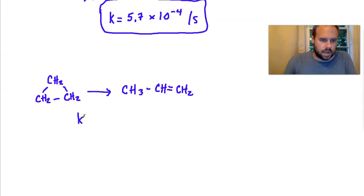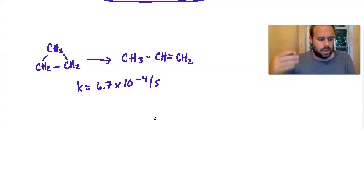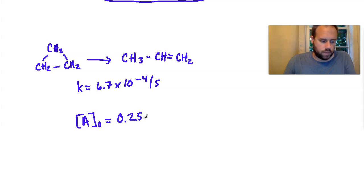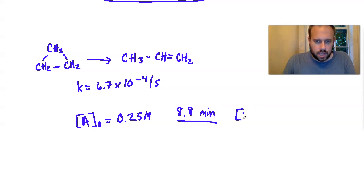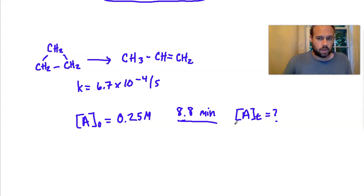The rate constant for this reaction is known to be 6.7 times 10 to the negative fourth per second. If cyclopropane is initially at 0.25 molarity — so A0 equals 0.25 M — the question is: what would be the concentration of cyclopropane after 8.8 minutes from the start of this rearrangement reaction?